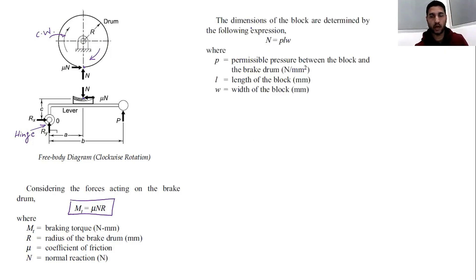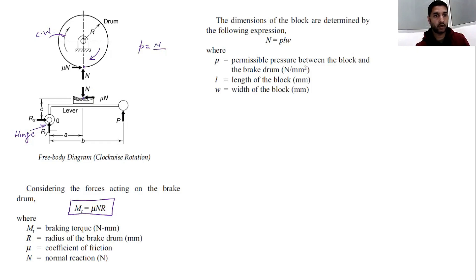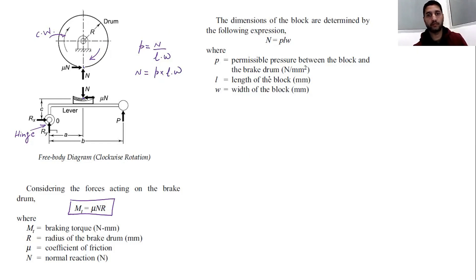Sometimes questions ask you to find the dimensions of the block. We know that pressure equals force divided by area, so N equals pressure × area = P × l × w, where P is the permissible pressure between the block and the brake drum in N/mm², l is the length of the block in mm, and w is the width of the block in mm. From this formula you can find the dimensions of the block.